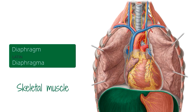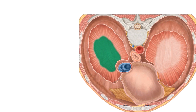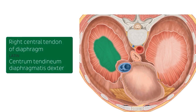Going back to the thoracic surface of the diaphragm, we're highlighting what is known as the right central tendon of the diaphragm. The diaphragm in the center is comprised of a tendon called the central tendon, which is made up of a strong aponeurosis. Here we see the right central tendon specifically.